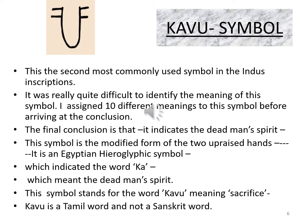The cow symbol is the second most commonly used symbol in the Indus inscription. It was quite difficult to identify the meaning of this symbol — I assigned 10 different meanings to it before arriving at a conclusion. The final conclusion is that it indicates the dead man's spirit. The symbol is a modified form of two upraised hands — an Egyptian hieroglyphic symbol which indicated the word 'kha,' meaning the dead man's spirit. The symbol stands for the word 'kahu,' meaning sacrifice. 'Kahu' is a Tamil word and not a Sanskrit word.